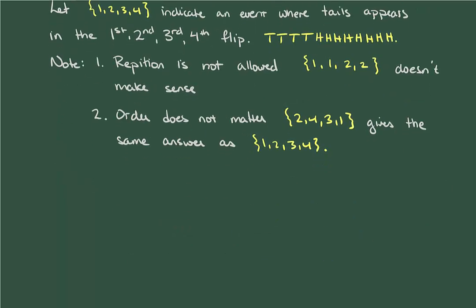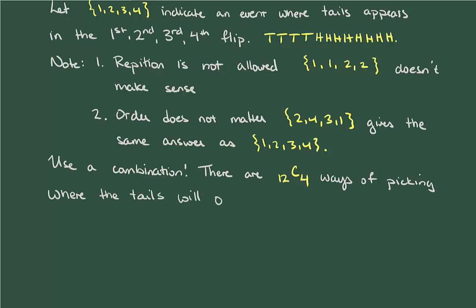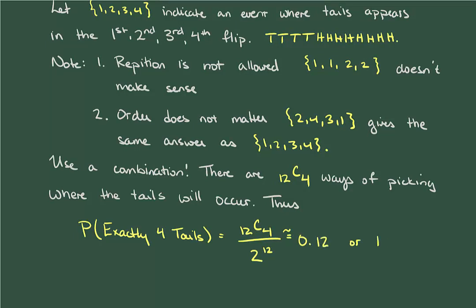All of this combines to say that we can determine the number of places that 4 tails can occur by using a combination and that there are 12 choose 4 ways of choosing where the tails goes. Since the coin is fair, the probability of 4 tails is just the quotient of the number of desired events by the total sample size. And this works out to be about 12%.